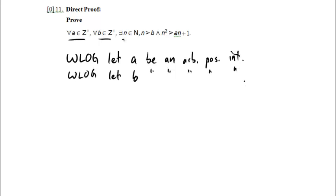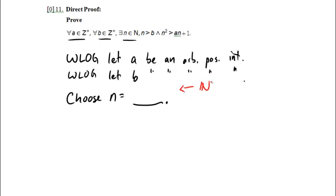Now here's my next operator — an existential — so I choose n equal to something. I don't know what n is going to be, so I'll come back to that later. But I note for myself that n has to be a natural number, and n can be based on a and b, because we've already specified a and b by this point.